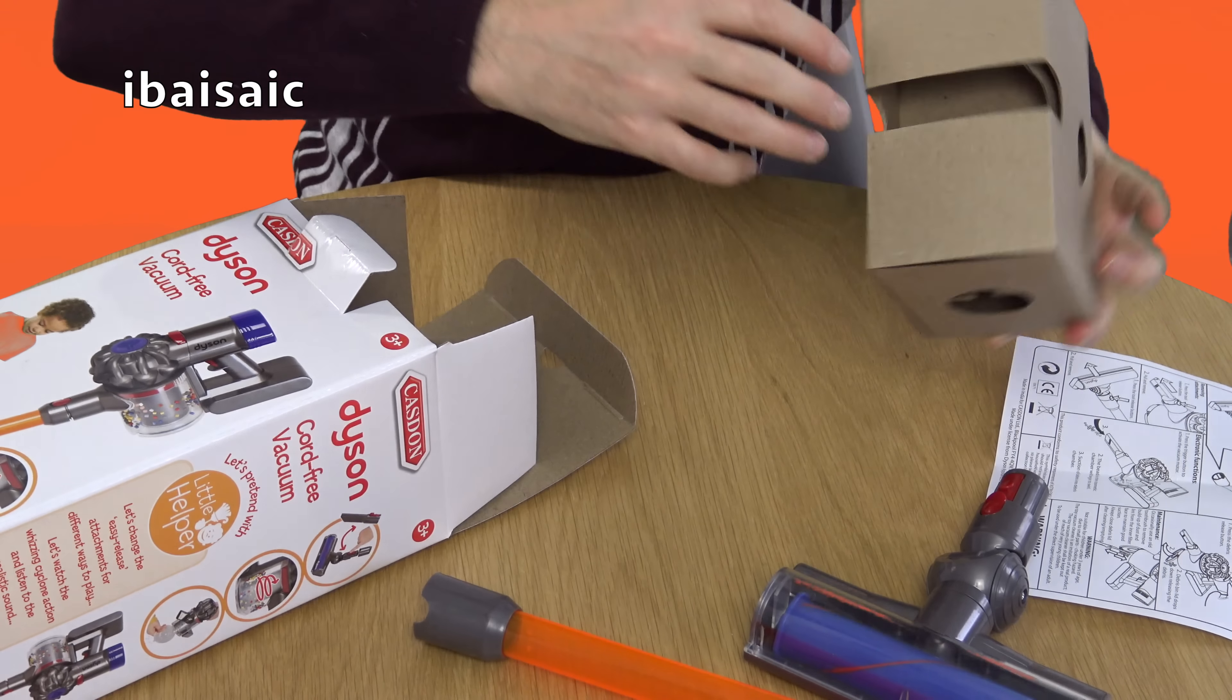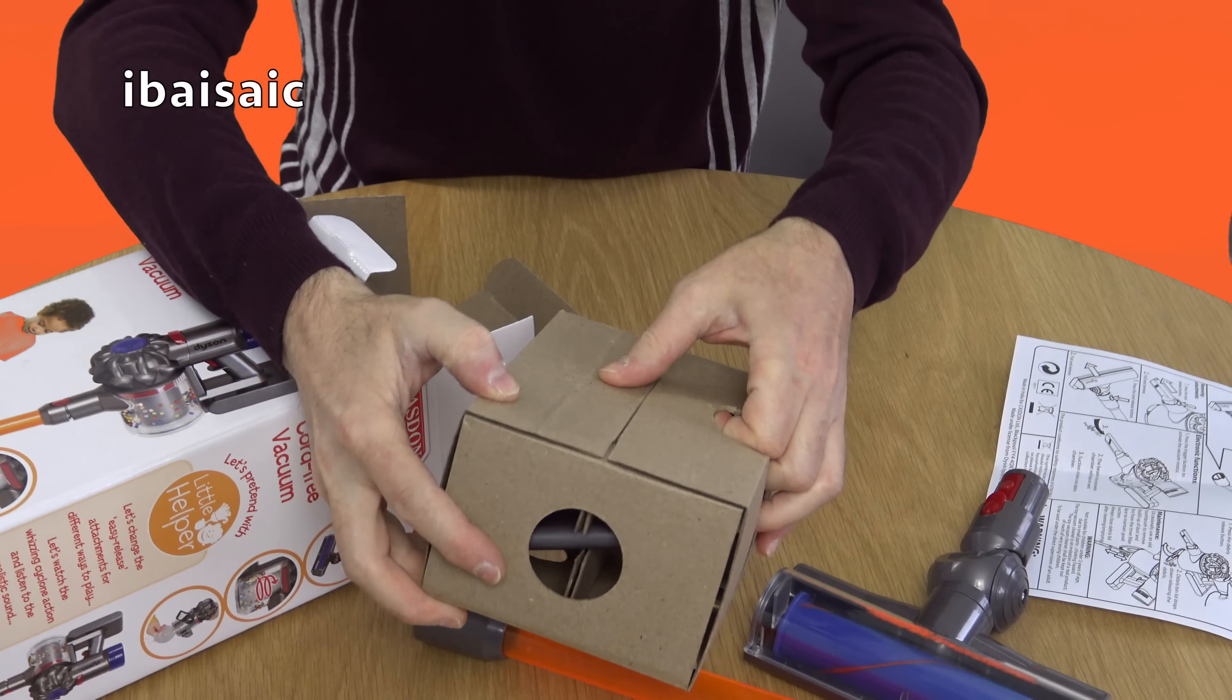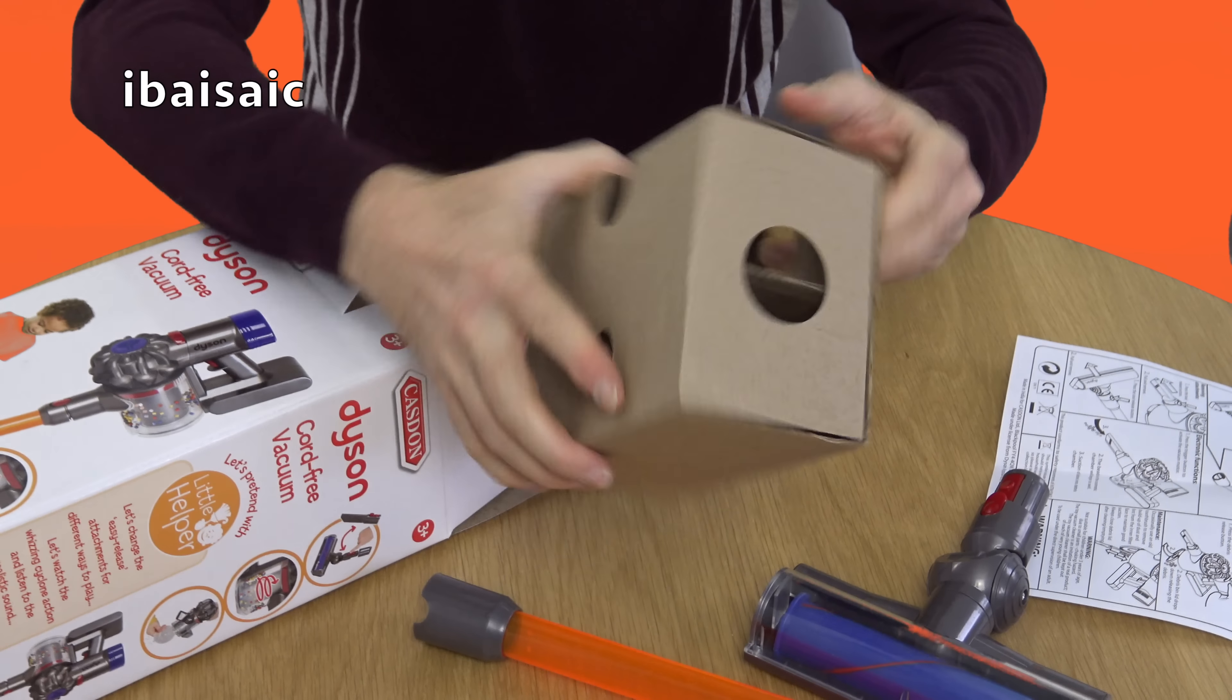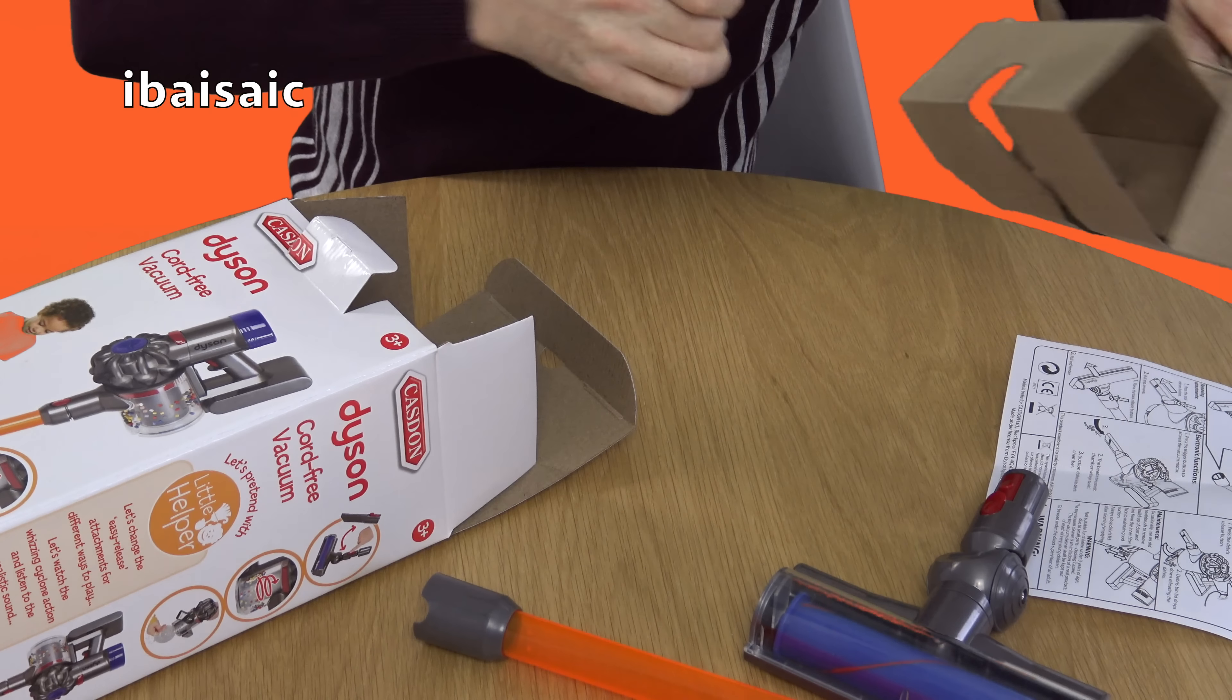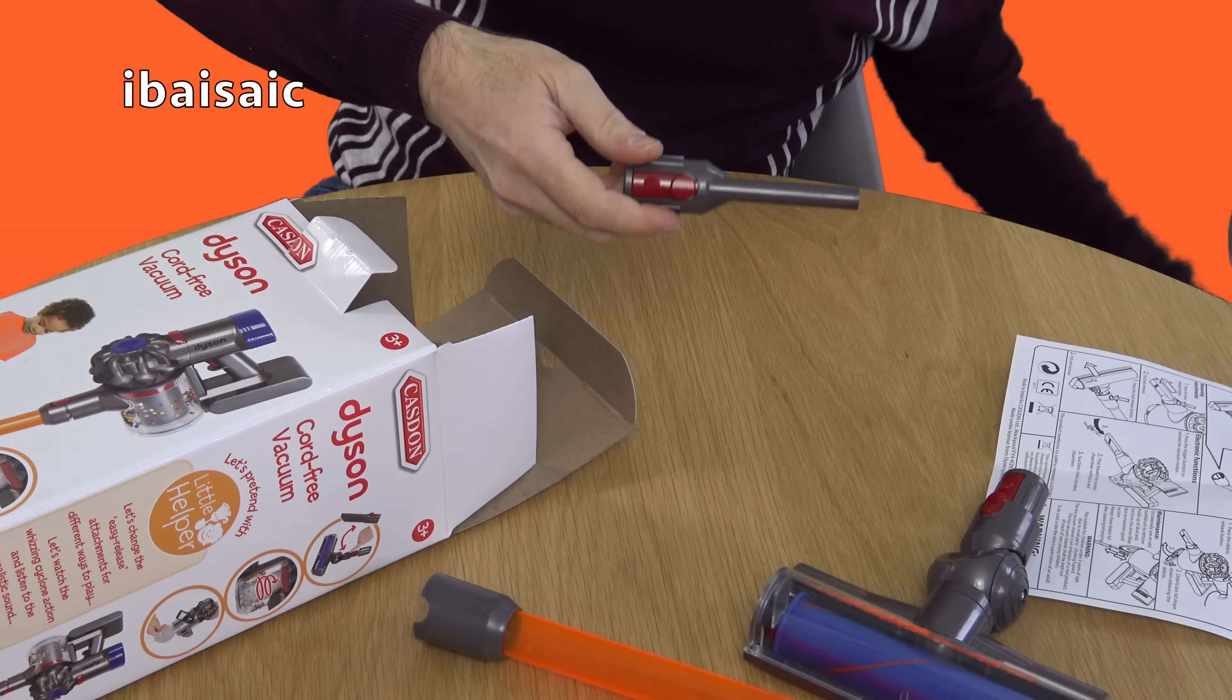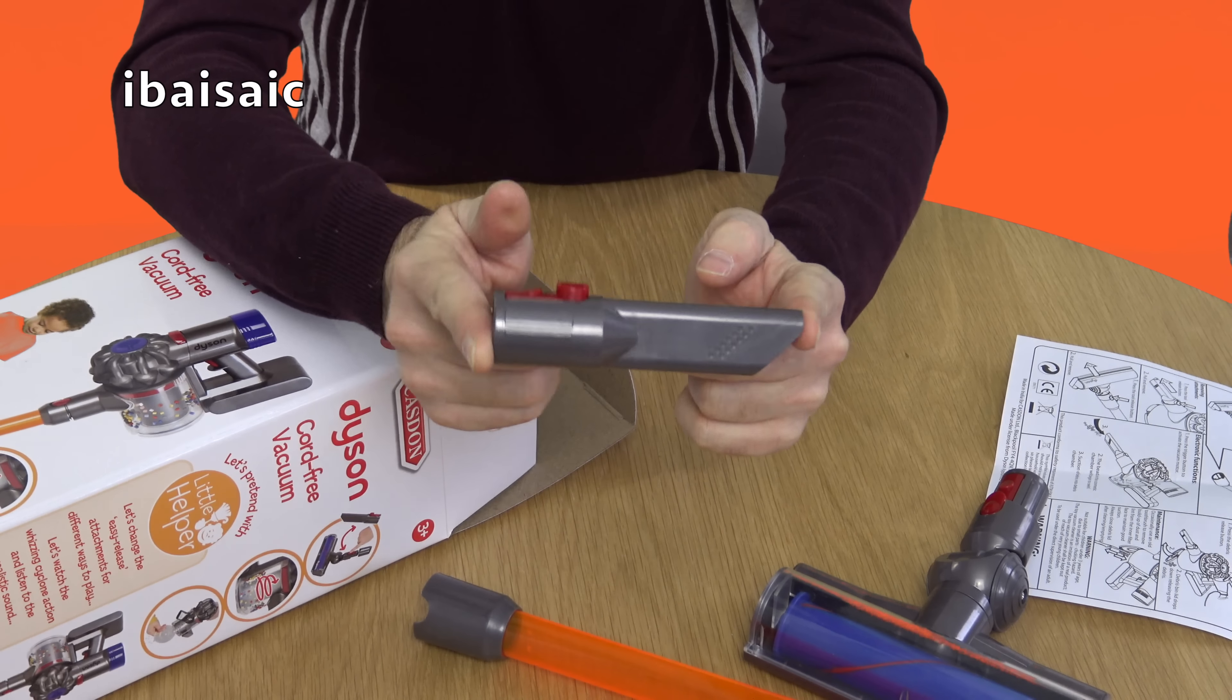And inside this bit of cardboard I was about to throw, I think there's another nozzle. Let's open it up and have a look. Oh, just rip it open shall I? There we are. That's empty now. I'll put that on the floor. That's a little crevice tool, just like the real thing but smaller.